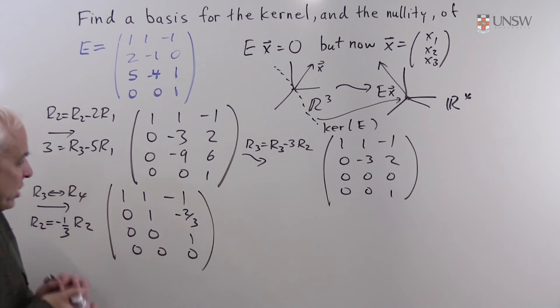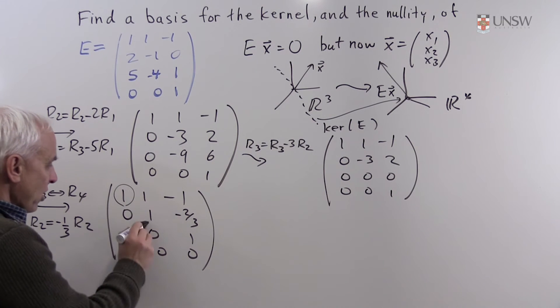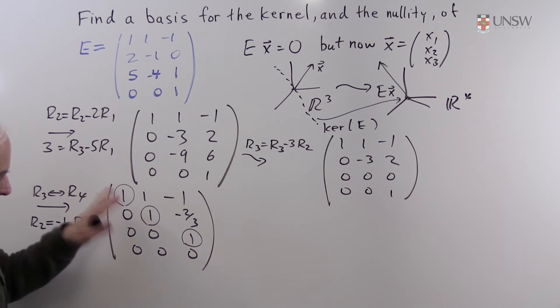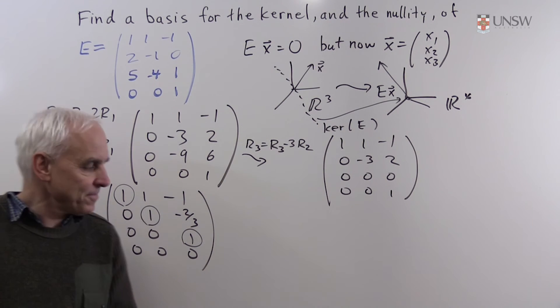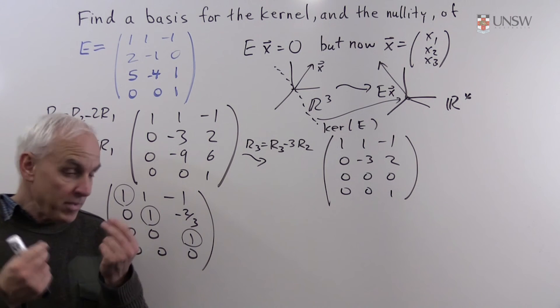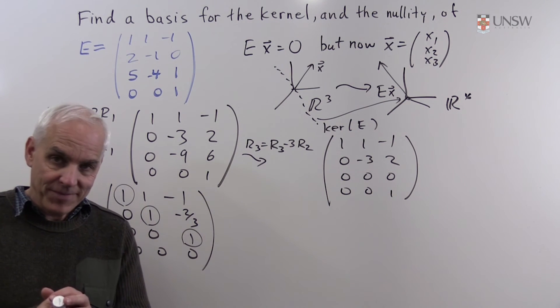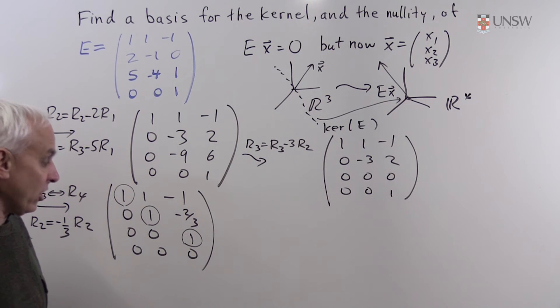So we've arranged that our pivot entries are staggered down to the right. The rows of zeros are all at the bottom. So we can read off from here what the situation is in terms of solutions. Each one of these columns is a pivot column.